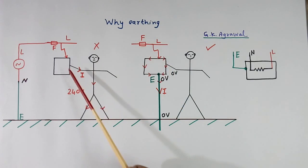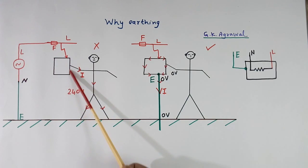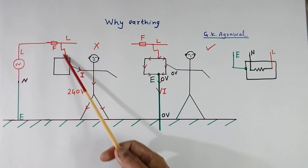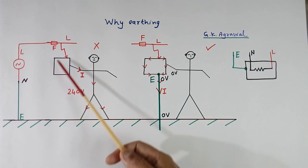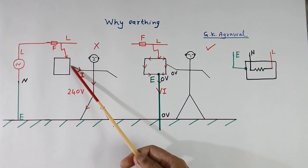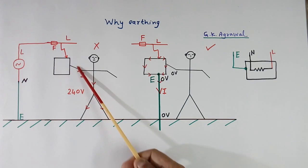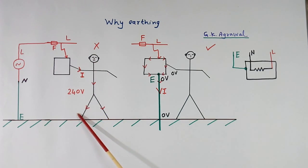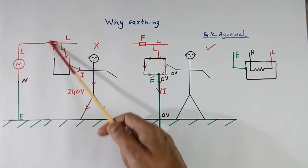Now why earthing at the load side? I have shown one electrical equipment — say an oven or heater. And we are touching this, and somehow there is a fault. So because of the fault, current will flow through our body. The circuit is complete and we get a shock because current is flowing through our body. Our body resistance is more, so even though full 240 volt comes, current flow will be less — the shock will be there. But this current may not be sufficient to blow the fuse.